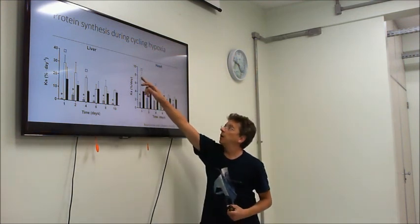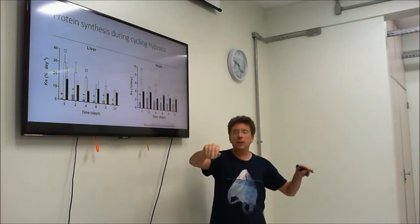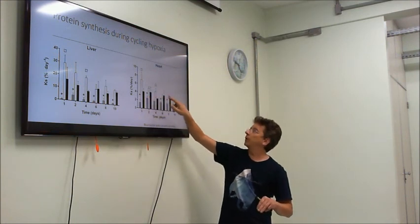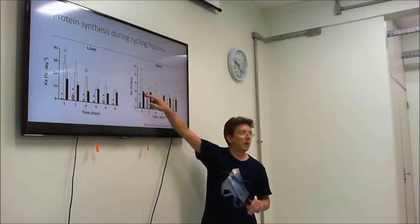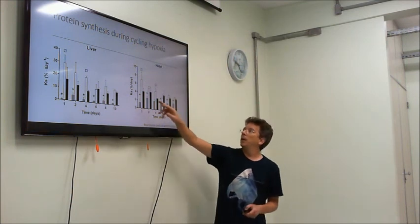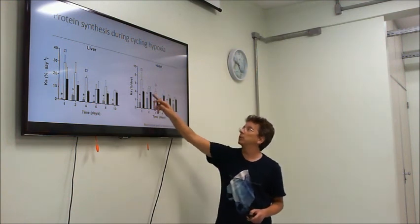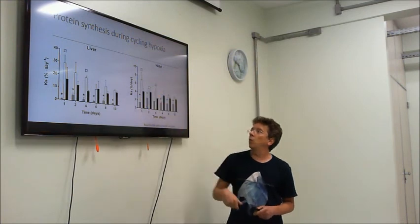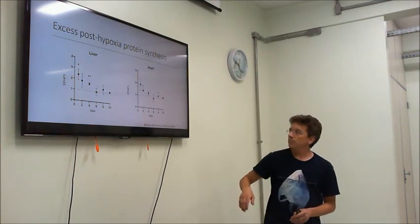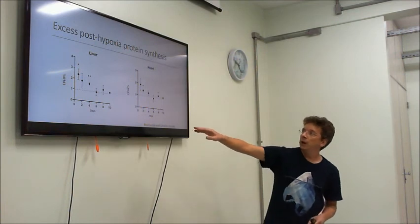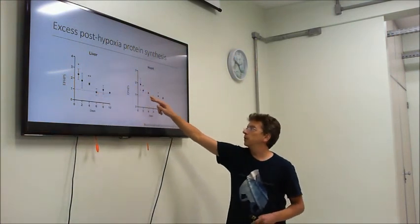We have heart, same thing here. The black bar is control. It's fish maintained in the same conditions but without hypoxia. The control fish, they're pretty stable. When the bar, the white bar goes above control, above the black bar, it means there is something happening. We calculated this increase of rate of protein synthesis. Basically what we did is we calculated the proportion of this that's above this one, and we calculated what we call an excess post-hypoxia protein synthesis. What we see in most tissues is that there is an excess for the first few cycles, and then it disappears. Excess for the first few cycles, and it disappears.